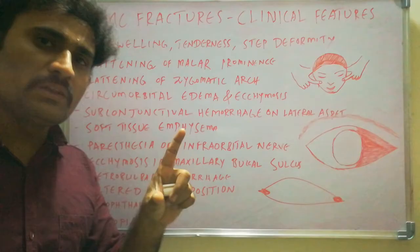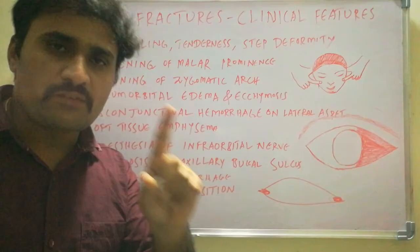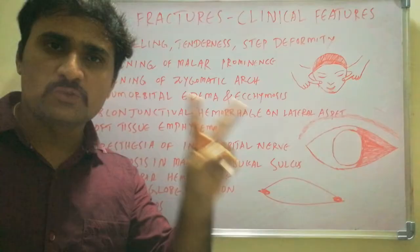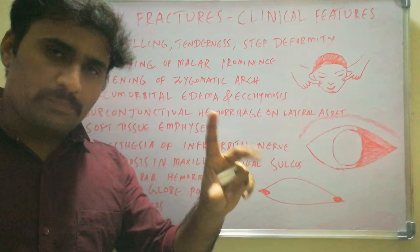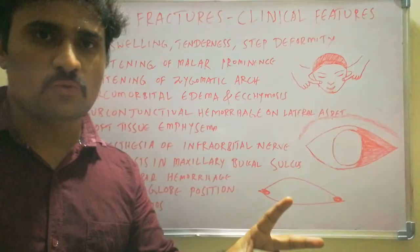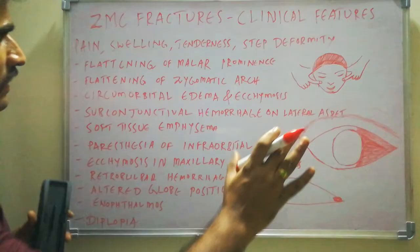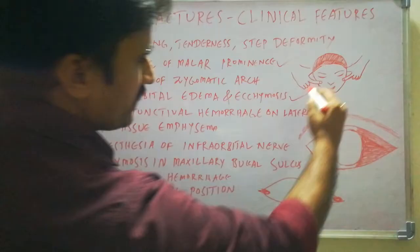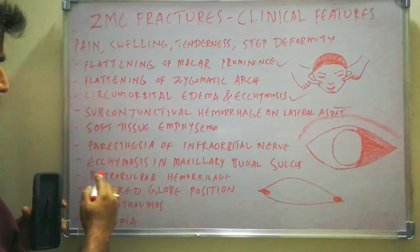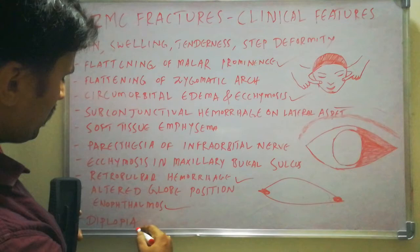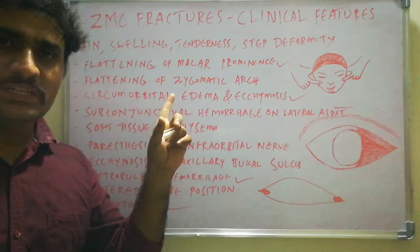Diplopia is double vision — the perception of two images of one object. A separate video will be made on diplopia as it is sometimes asked as a short answer question. The most important clinical features of ZMC fractures are flattening of the malar prominence, circumorbital ecchymosis and edema, subconjunctival hemorrhage, retrobulbar hemorrhage, enophthalmos, and diplopia.